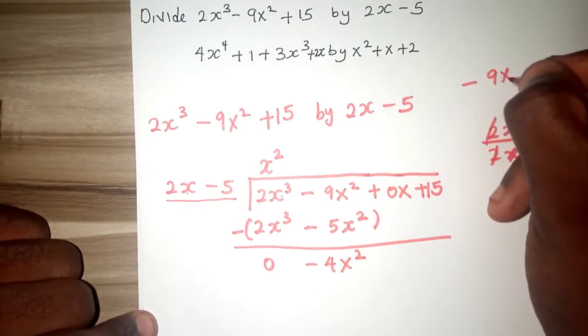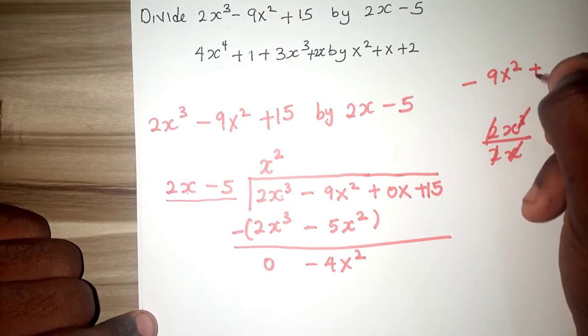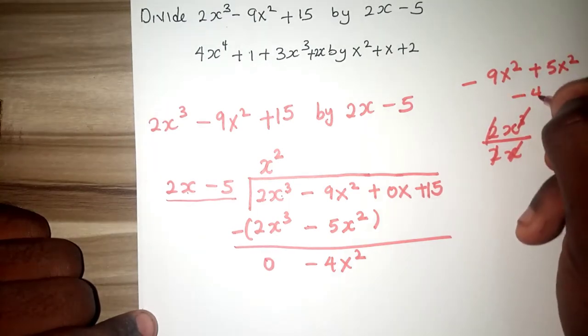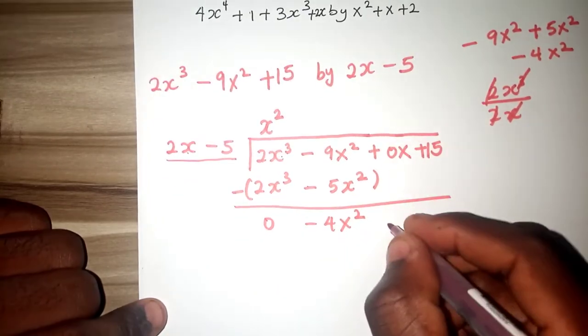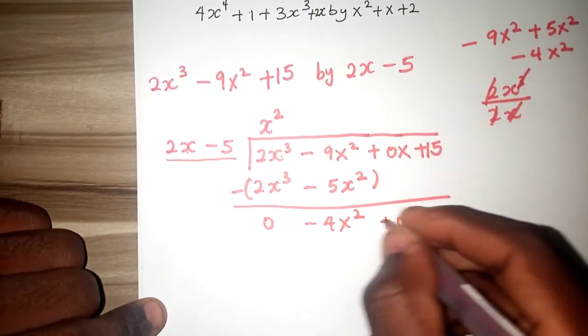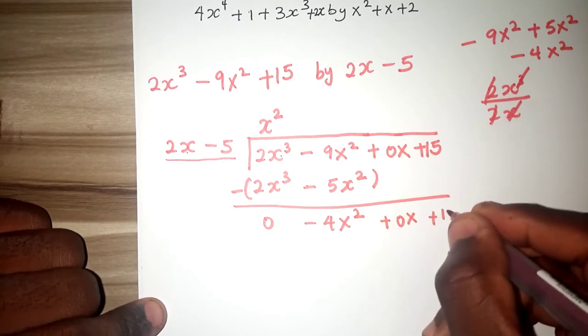Minus 9x squared plus 5x squared, this one will give us minus 4x squared. Now we can write our 0x and also plus 15.